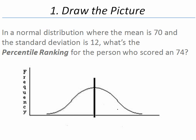The first step we need to do is to draw the picture so that we can see visually what is being asked of us in this problem. Our mean here is 70. The value that we are interested in is a value of 74. Notice that this divides our distribution into three parts.